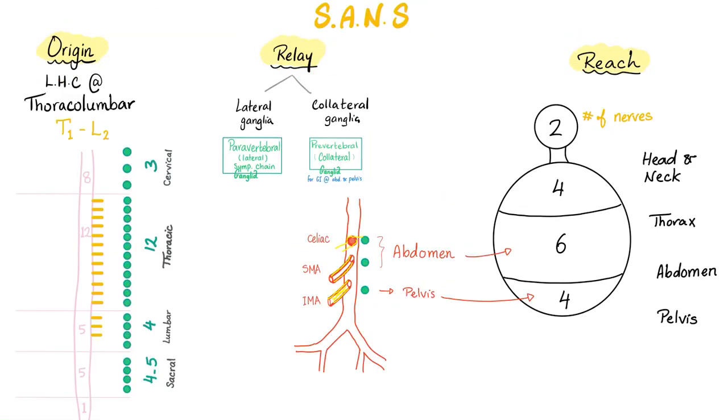Sympathetic nervous system. Origin, relay, and reach. Origin, lateral horn cell. Be specific where thoracolumbar. Or be specific from T1 all the way up to L2 or L3. Relay, it could be in lateral ganglia most of the time. This is called the sympathetic chain. Or prevertebral or collateral ganglia. And these are in the midline in front of the spinal cord next to the major vessels of the foregut, midgut, and hindgut respectively.